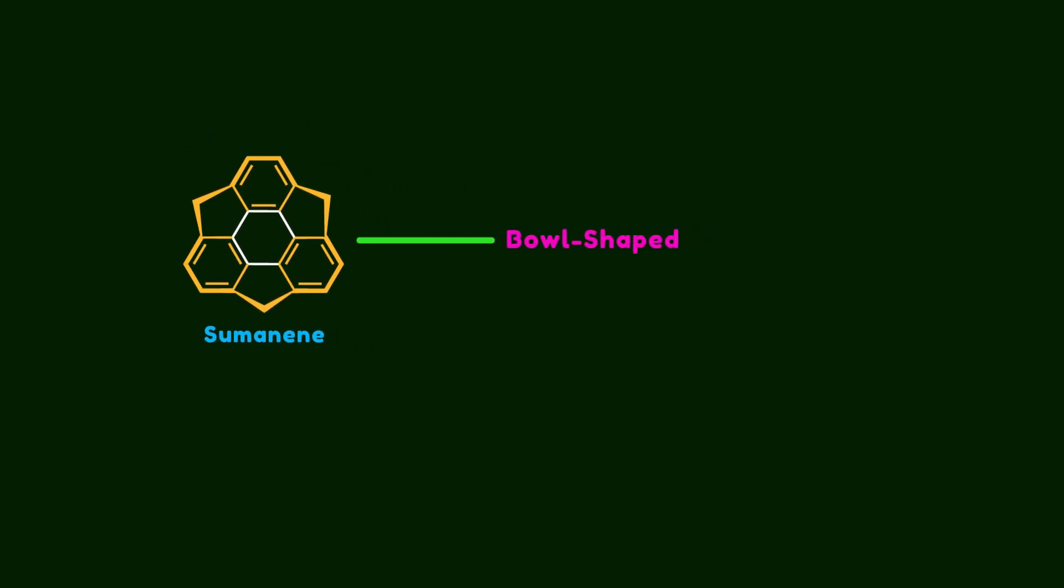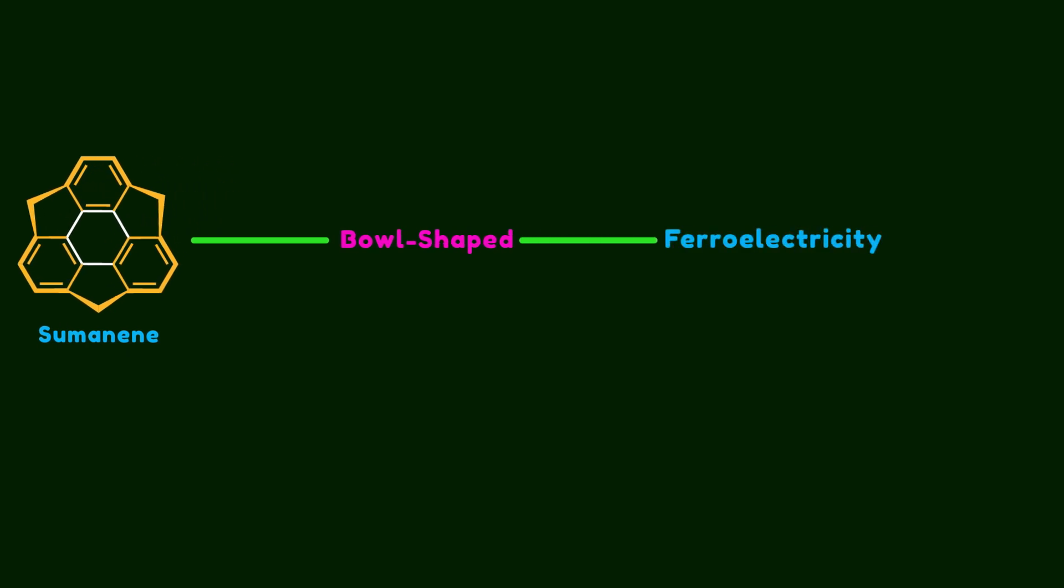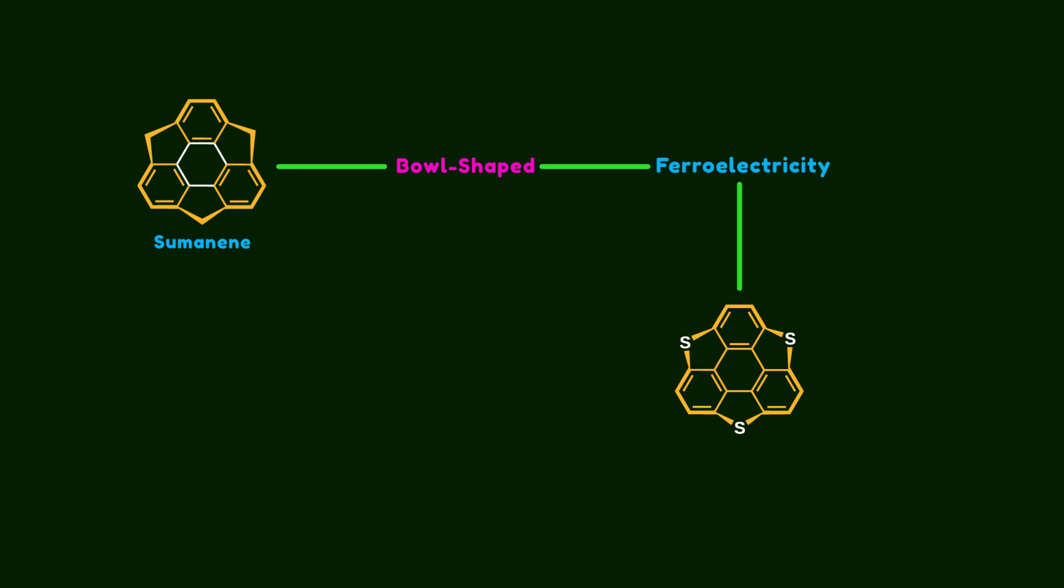So far, we've learned that sumanene is a conjugated polycyclic hydrocarbon with a bowl-shaped structure. And because of its features, we might expect it to show ferroelectricity. But here's a twist. It only actually shows ferroelectricity when the CH2 units are replaced with sulfur atoms. So in the rest of the video, we'll try to answer three big questions.